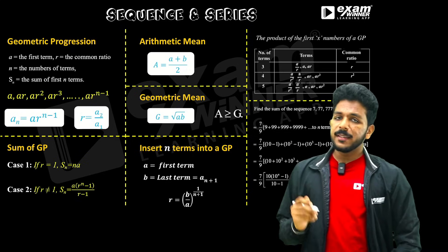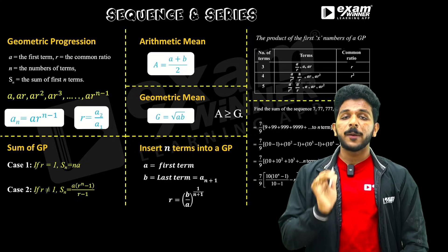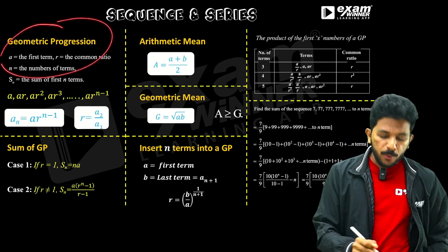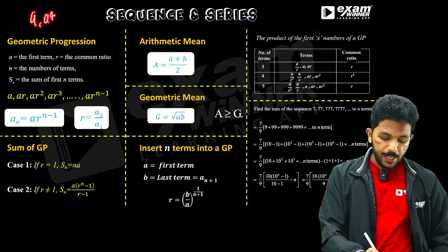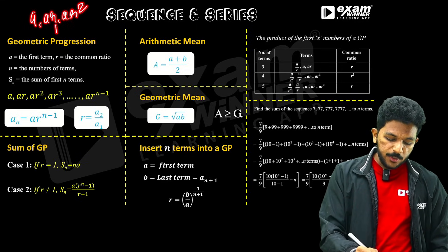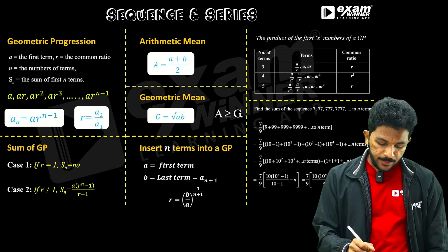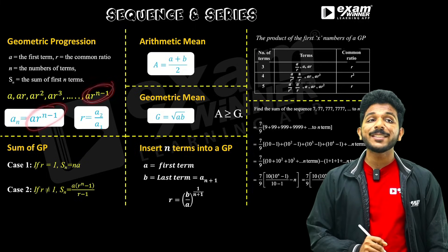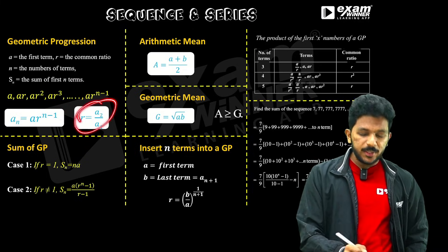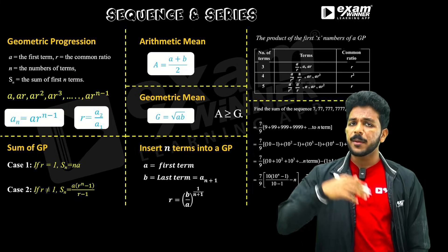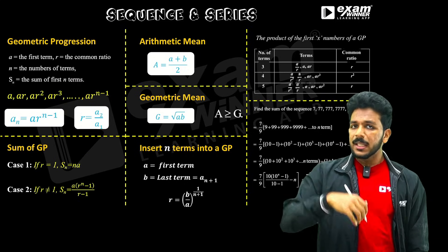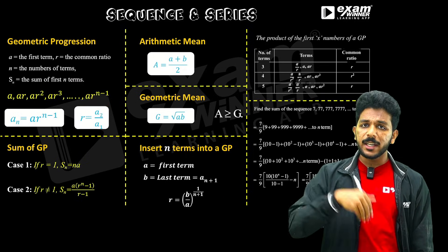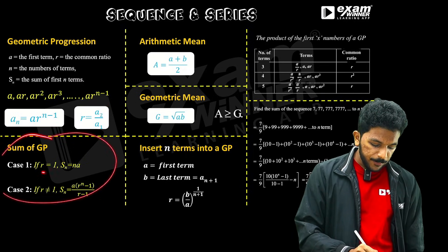This is sequence and series. In sequence and series, GP is focused on. What is a geometric progression? The terms are a, ar, ar squared. R is the common ratio and a is the first term. The nth term is a times r raised to n minus 1. Common ratio is the second term divided by the first term, or (n+1)th term divided by nth term. The sum of GP is given by the ratio formula.